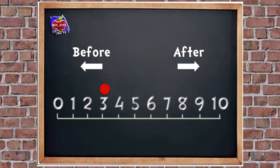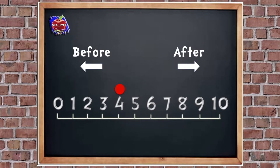Let's have another go. Number four — is number six before or after four? So where's number six? Which way is the arrow pointing? Yeah, it's after. Good job.